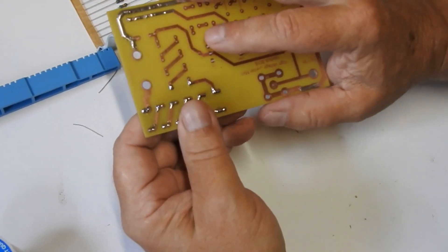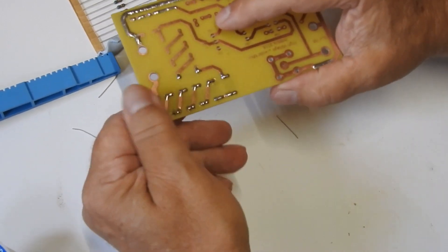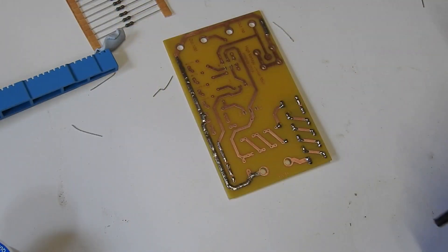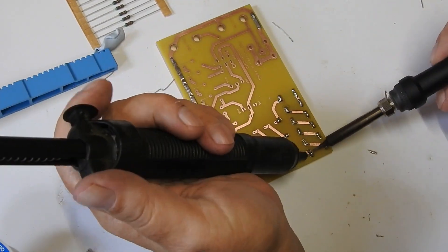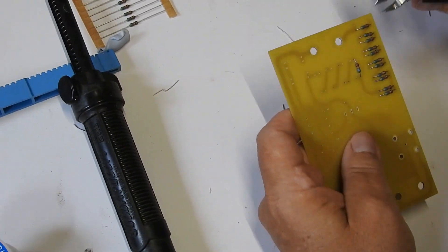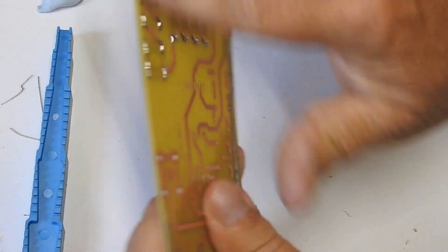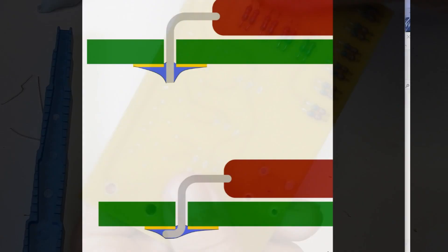So there we go, all nice and fixed. And then comparing the two methods side by side, you can see the obvious advantage of this one: smoother, lower profile, enclosed cut end, better contact between lead and copper, compared to that.